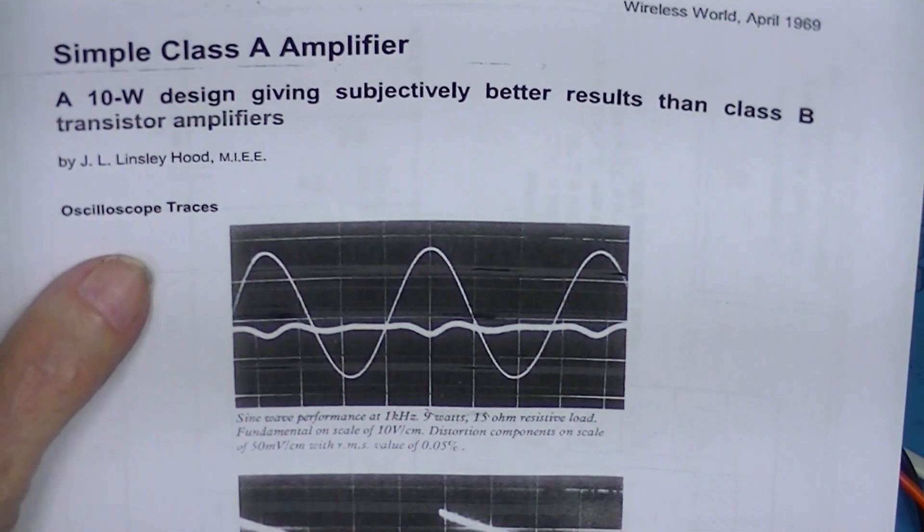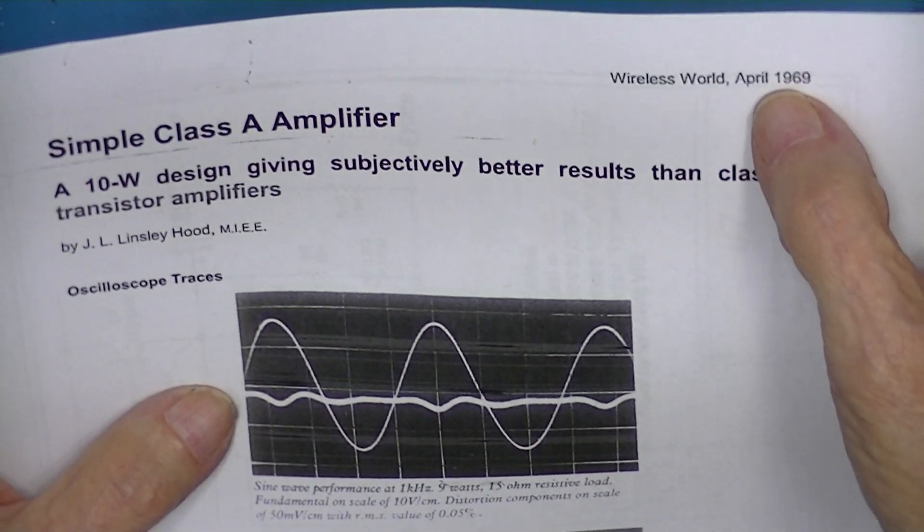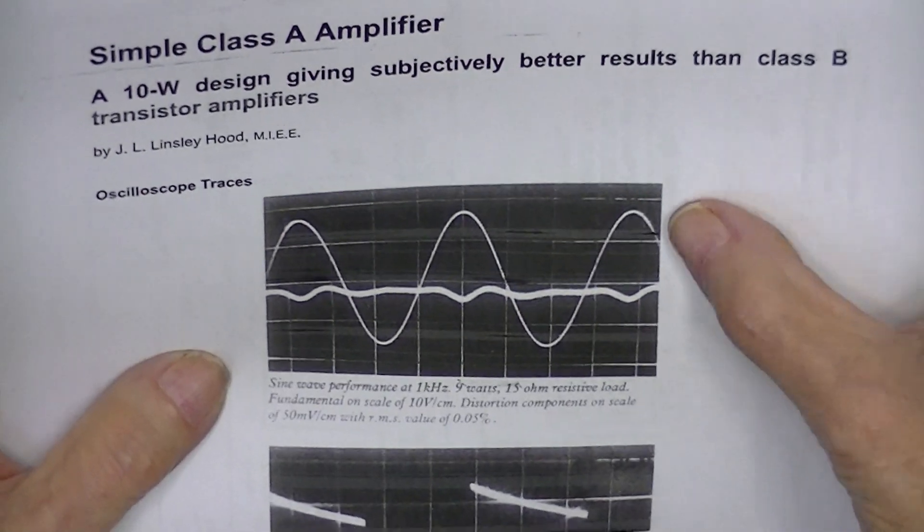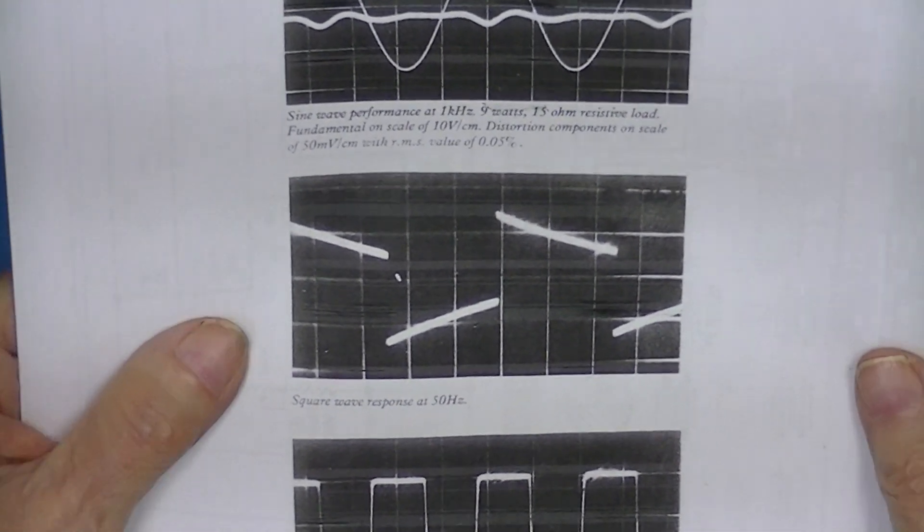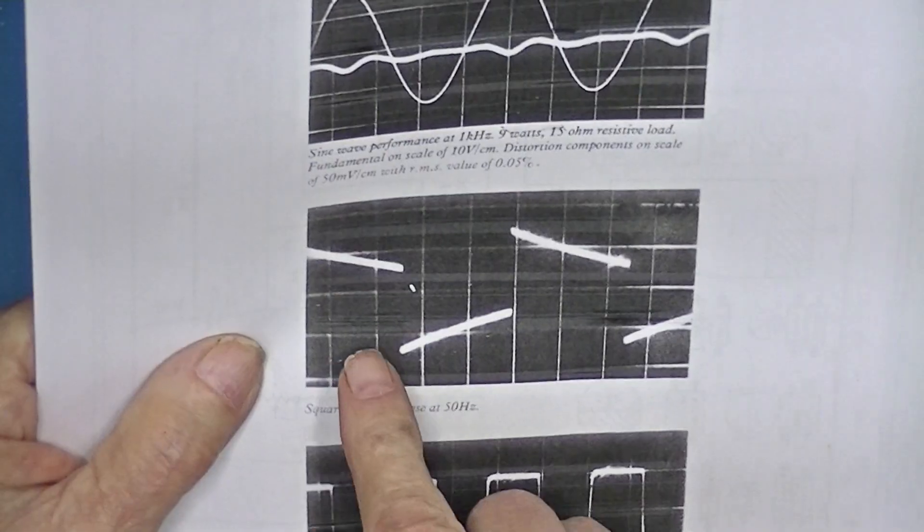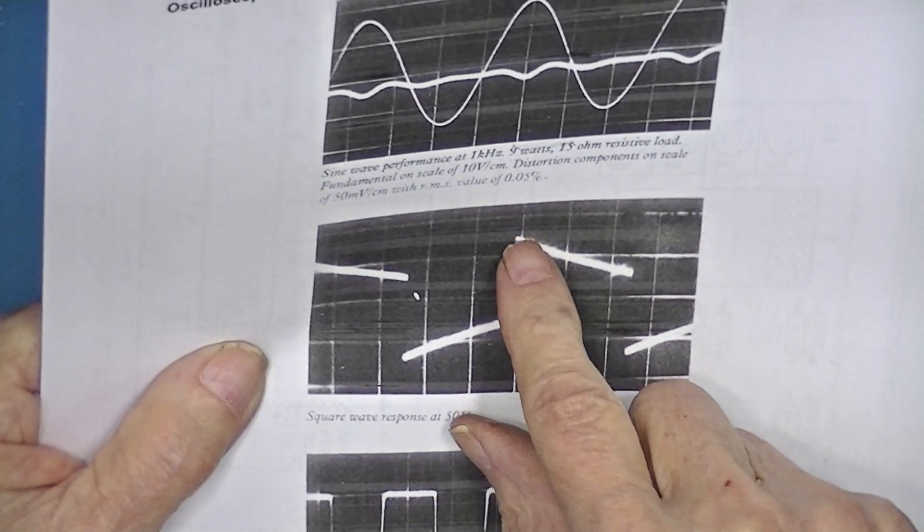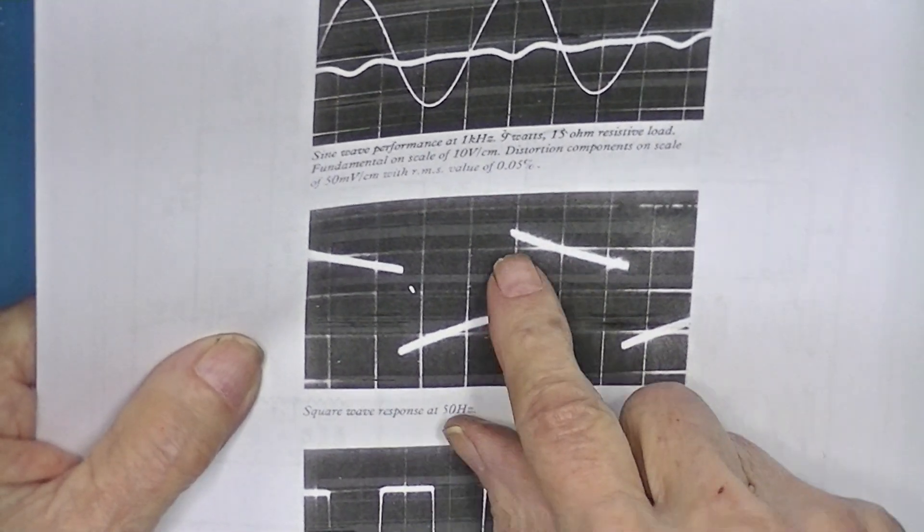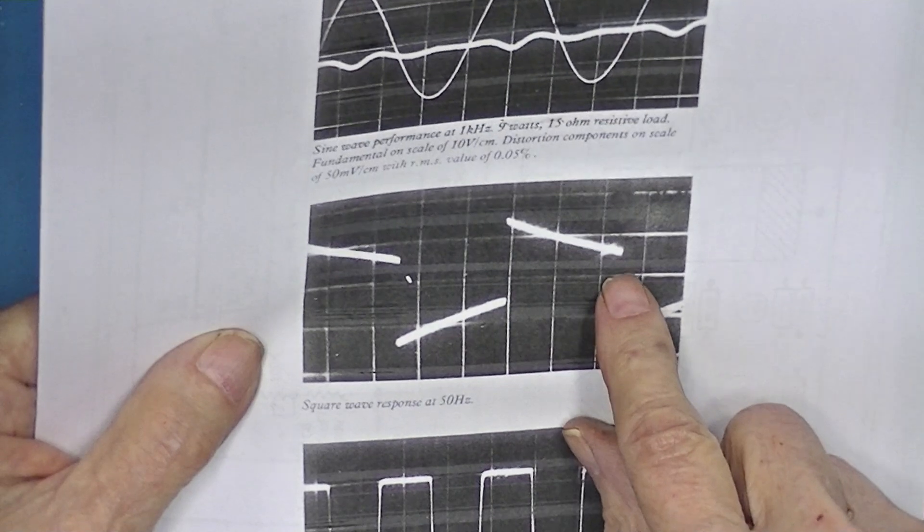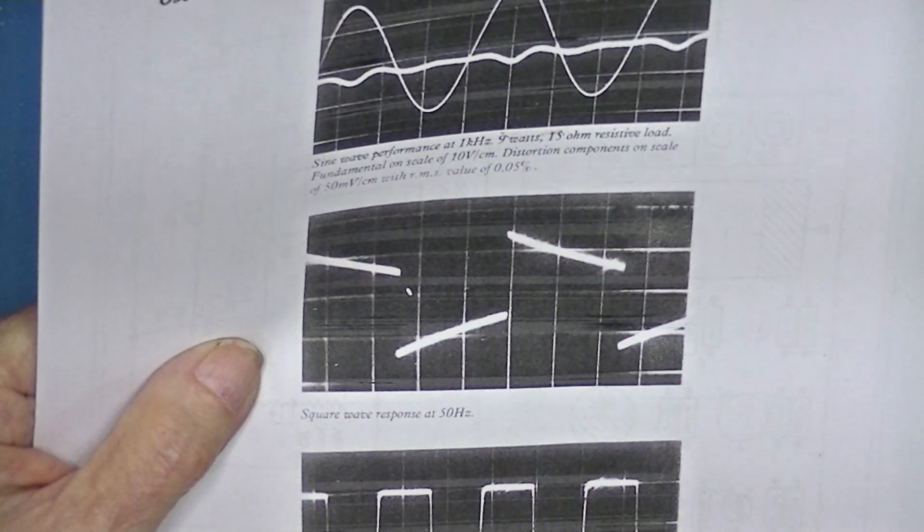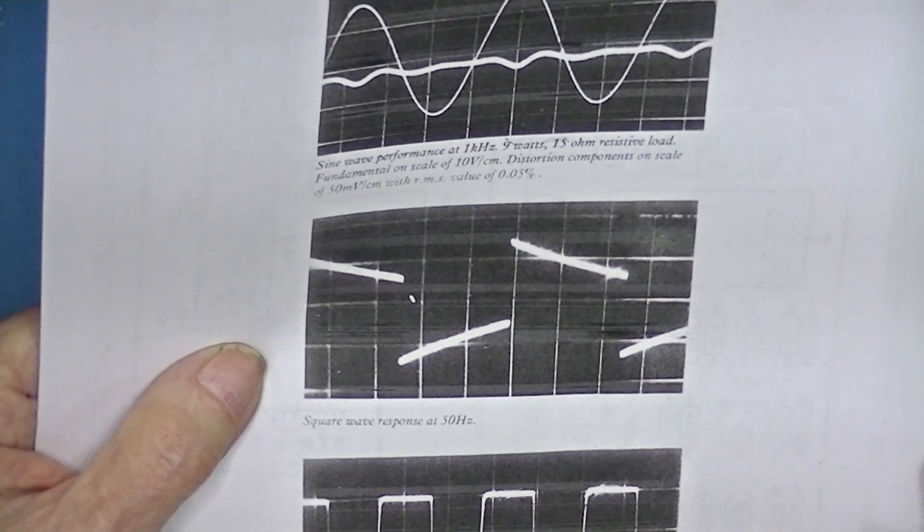We have three photographs from the original JLH amplifier article in 1969. This involves a distortion analyzer which I don't have access to. This is a square wave input at 50 hertz. If we assume this is zero volts right here, you'll notice that the wave extends about one and a half spaces above here at the beginning of the wave, and then due to capacitive coupling effects, it drops to about half. So we have approximately 50 percent slope on what was supposed to be a square wave.